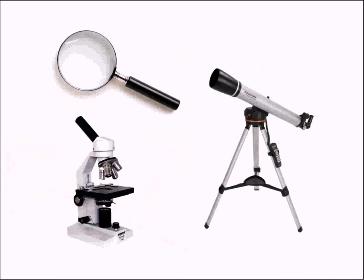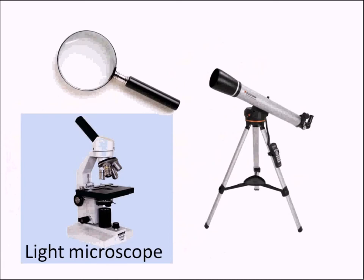You probably guessed — if you want to see cells you would use a microscope. This type of microscope is one you may have seen before because you use them at school, and these are called light microscopes.